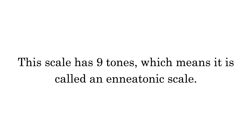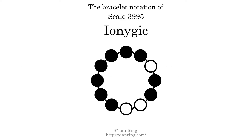This scale has 9 tones, which means it is called an enneatonic scale. This is a bracelet notation diagram of scale 3995. The shaded circles represent tones that appear in the scale, and they are read clockwise, starting at the top.